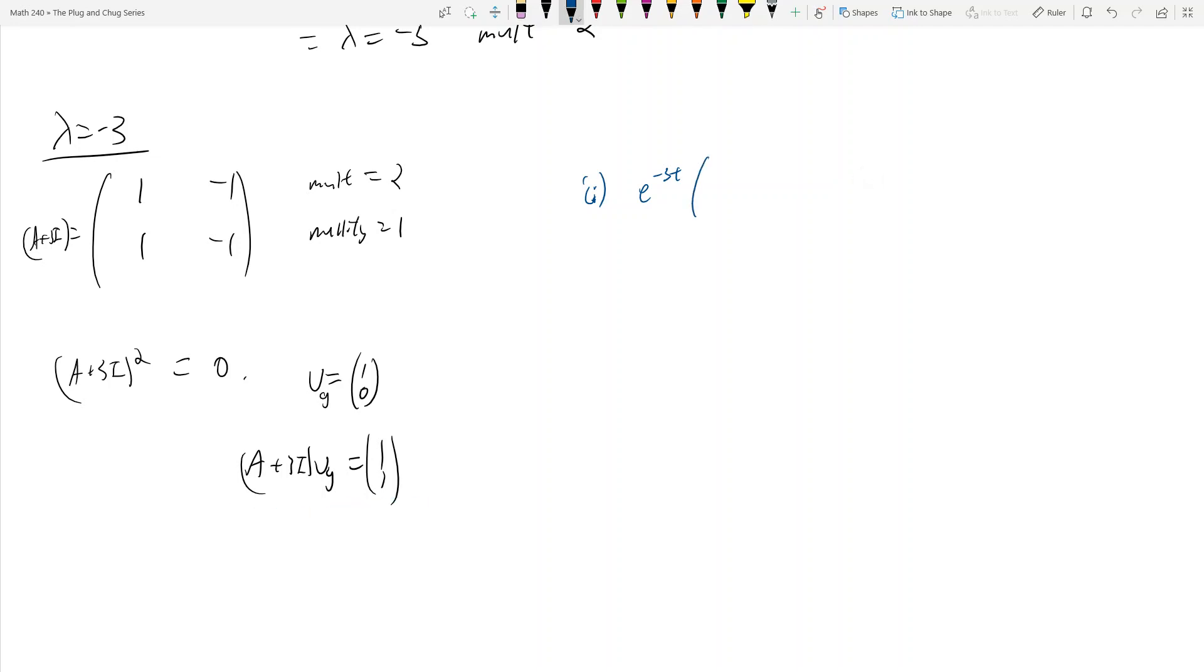Which is going to be (1,1). And then the second linearly independent solution is going to be e^(-3t) times t times (1,1), and then plus Vg now, which is (1,0).